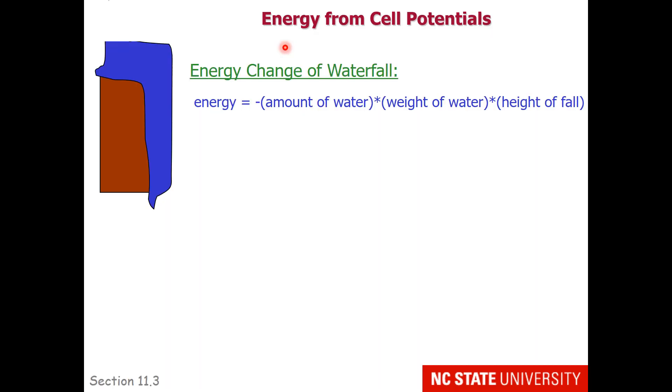To explain the energy from cell potentials, we need to think about electrons as drops of water. Let's think about the energy change of a waterfall. The energy change that the water experiences is going to be equal to the amount of water that falls over the waterfall. Obviously you can get more energy loss from a large river versus a small creek.